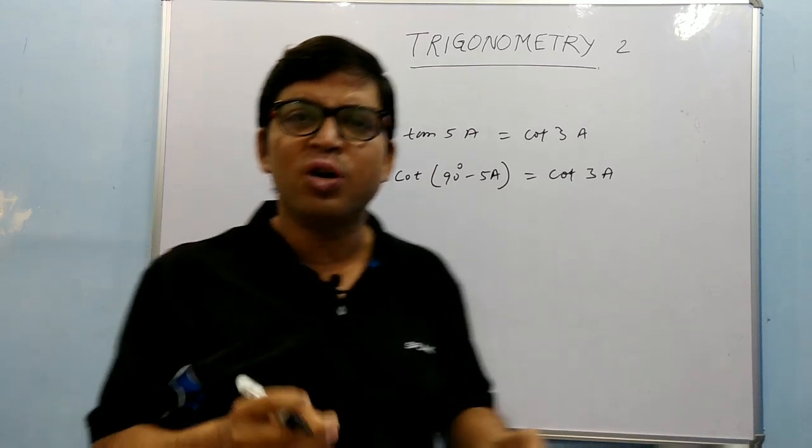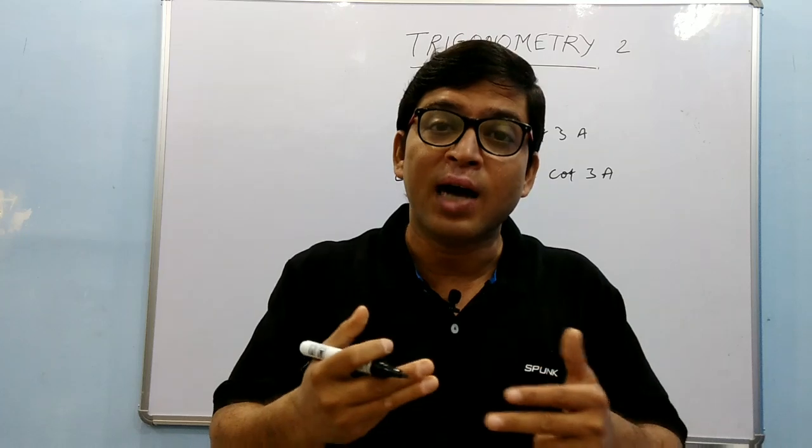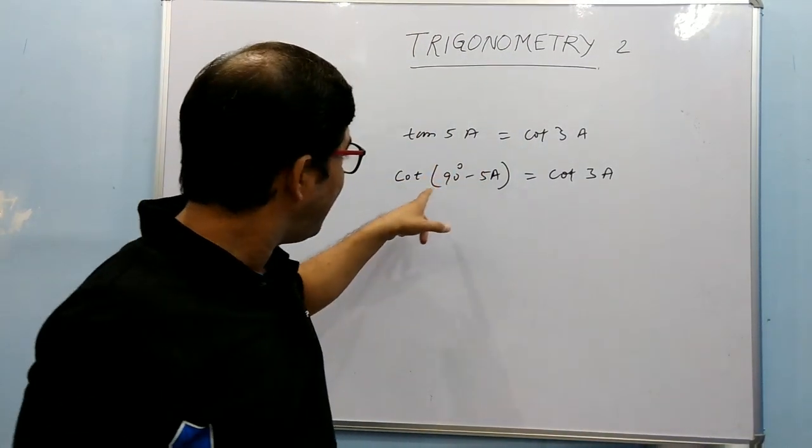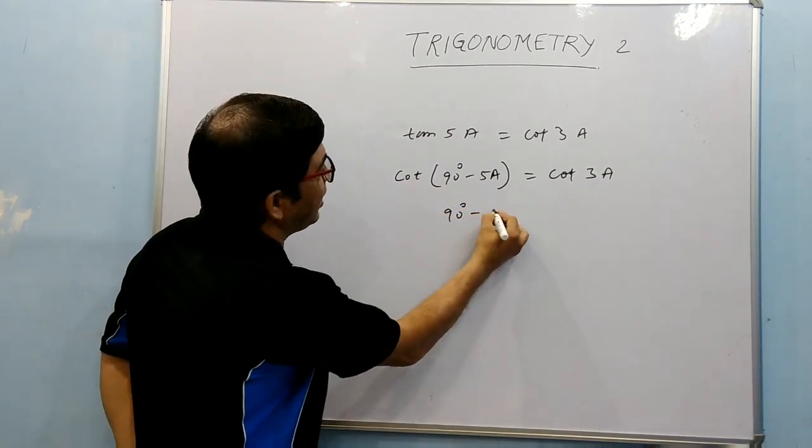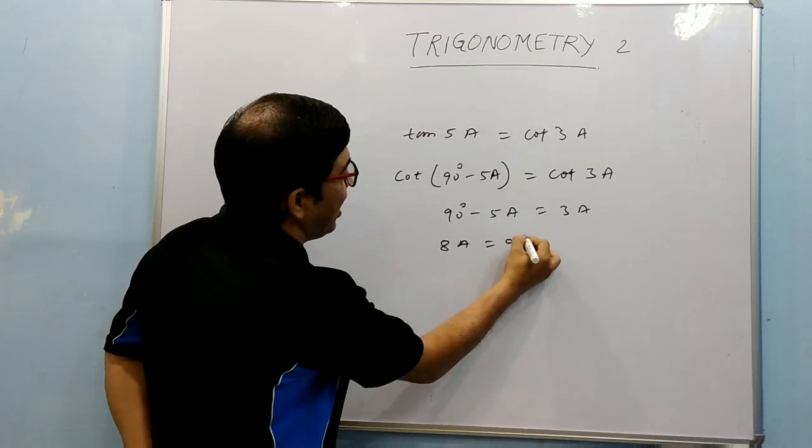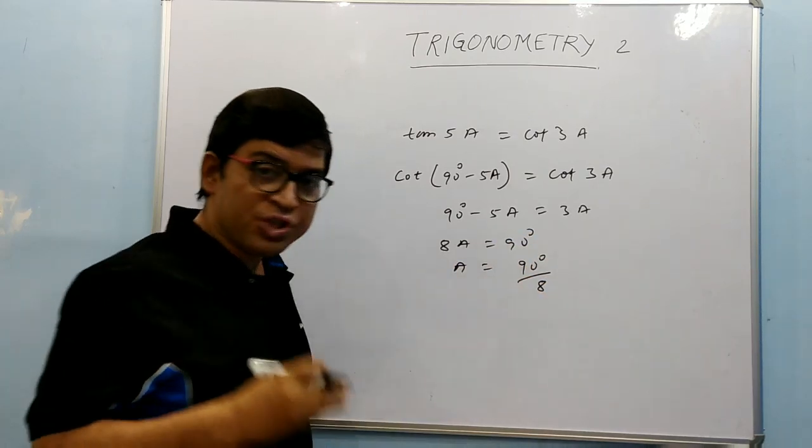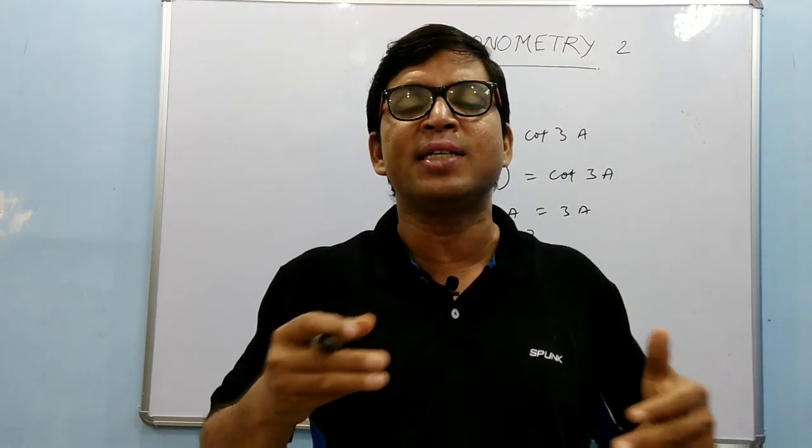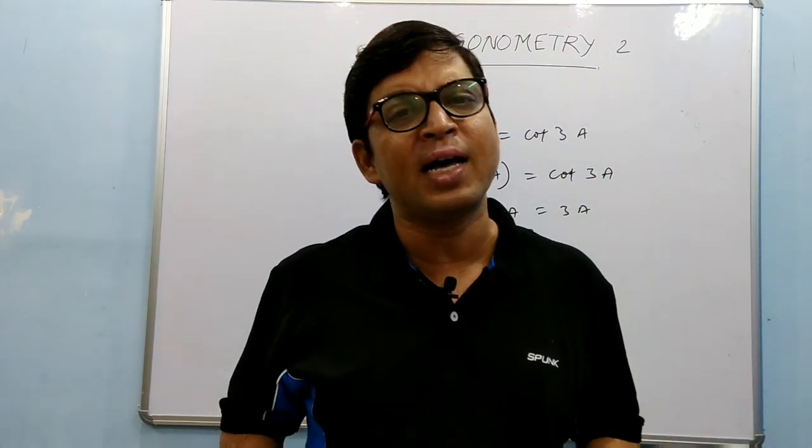Just making use of complementary angles. You know the meaning of complementary? Complementary means sum of angles is 90°. I made use of that. Now both sides cot is there. So I will be left with 90° - 5A = 3A. I am getting 8A = 90°, and I can get angle A very easily. Just make the planning and very simple one-step solution is there. In one step you are getting the answer.